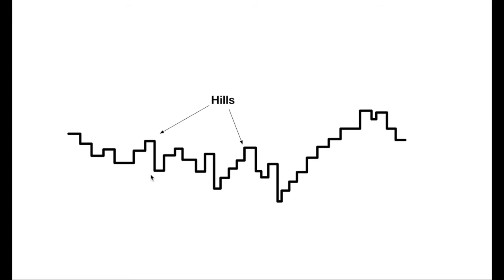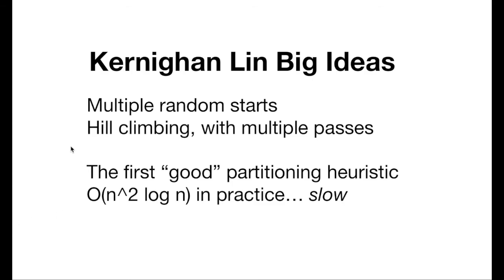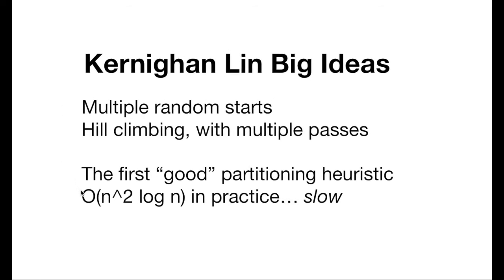This is a contrast to what a lot of people did with just straightforward, greedy algorithms. And so that's sort of the Kernighan-Lin approach, the really big ideas. They're starting off with multiple random starts. You start with random arrangement, and you wind up with a different solution. And really, hill climbing is the killer idea out of this, with multiple passes. This was the first good heuristic partitioning algorithm. If you're smart with how you update your costs, you can get something like O(n^2 log n) for each pass in practice, O(n^3) if you're not really careful. Either one of these are slow. There are faster, good partitioning algorithms, but Kernighan-Lin is a good one to know as a sort of foundation, and the hill climbing idea is absolutely pure genius.